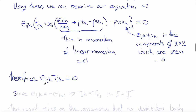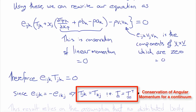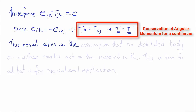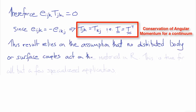Now recognizing that e_ijk equals negative e_ikj, obtained by switching indices k and j, the only way this can sum to zero is if t_jk equals t_kj — in other words, if the Cauchy stress tensor is symmetric. This is the same result obtained more easily before by considering equilibrium of stresses, and it only relies on the assumption that there are no distributed body or surface couples acting in the material.